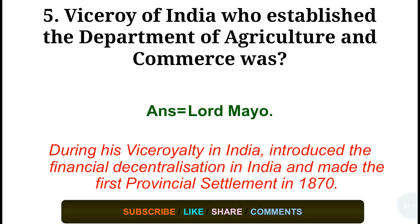Question number five: Which Viceroy of India established the Department of Agriculture and Commerce? The correct answer is Lord Mayo. During his viceroyalty, he introduced financial decentralization in India and made the first provincial settlement in 1870.